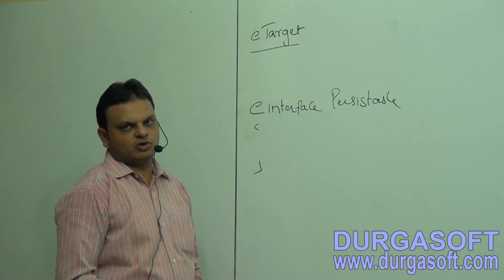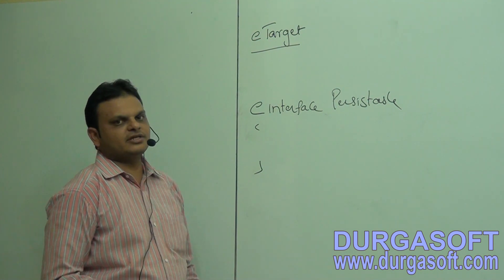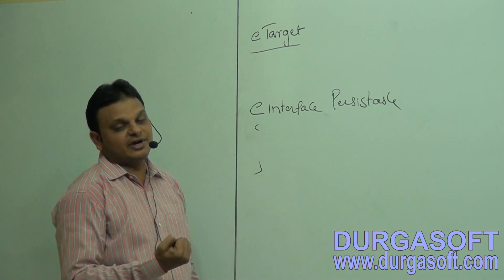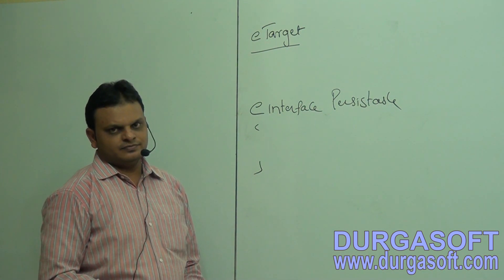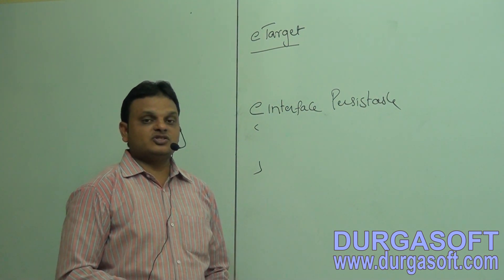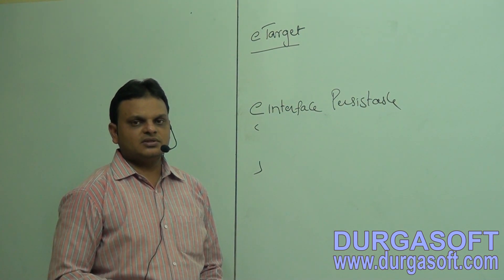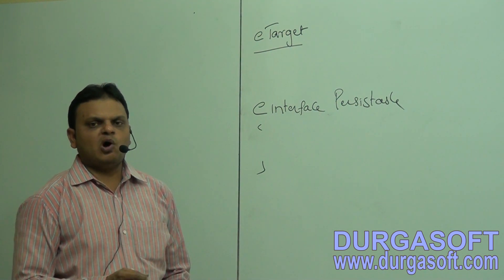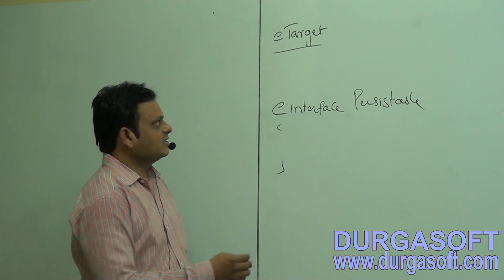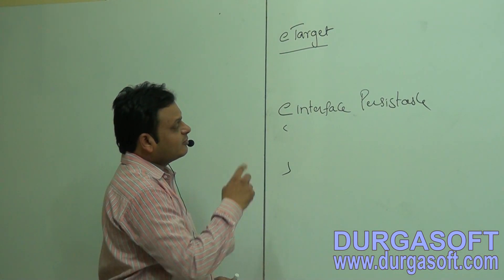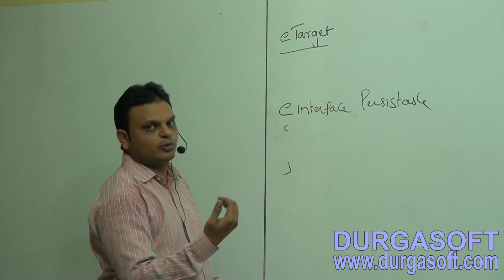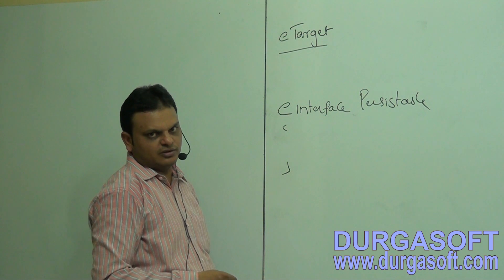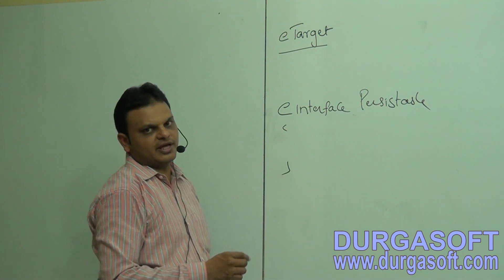Now we are going to discuss @Target annotation. The main purpose of @Target annotation is to define target elements for the annotation — that is, to specify which programming elements we want to apply the annotation to. In Java programming, we can apply annotations to variables, methods, constructors, packages, local variables, and other annotations. The purpose of @Target is to define which set of programming elements we want this annotation applied to.